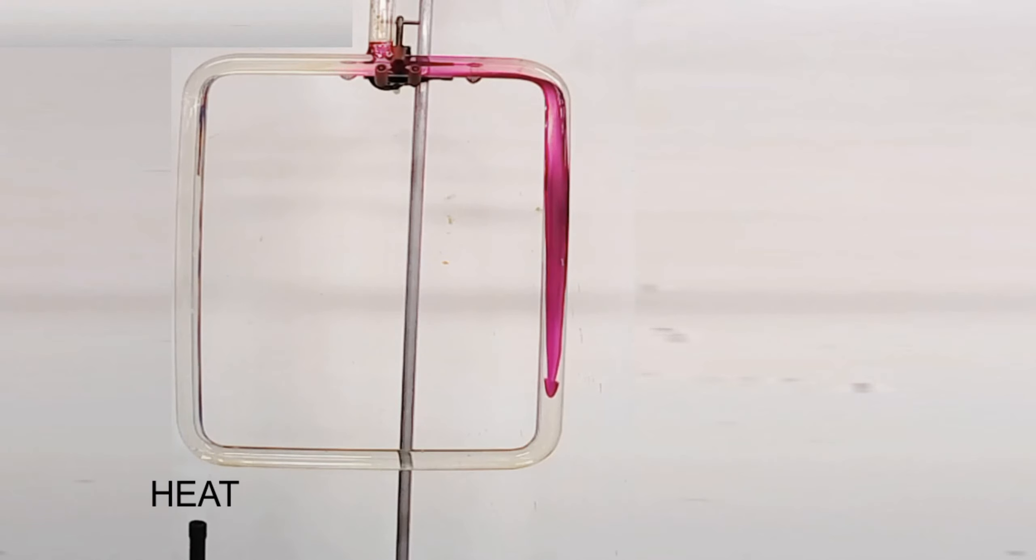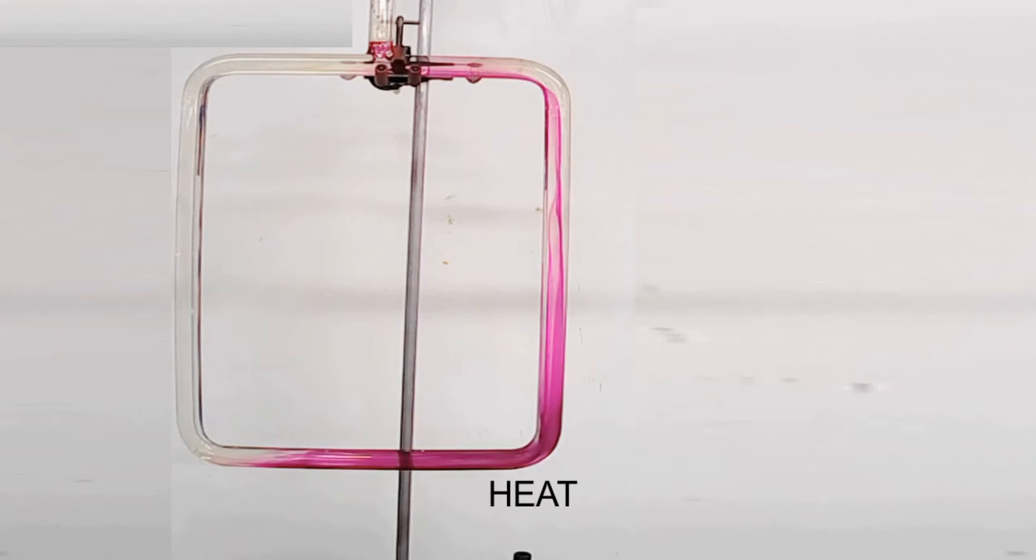If you however move the heat source, the Bunsen burner, to the right-hand side, the opposite occurs. Now the dye is moving anti-clockwise. This is called the process of convection, and I'm going to stop the video now.